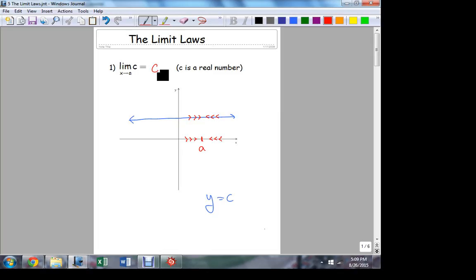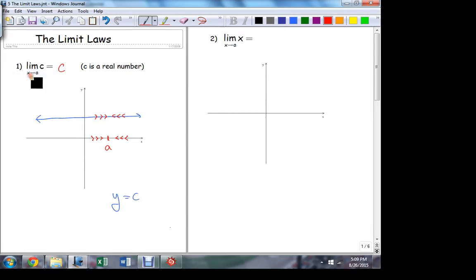Doesn't involve x. X changing doesn't have anything to do with how this, again, we can see it graphically. X changing doesn't have anything to do with this function's values. They're fixed. So the limit value must also be fixed. So for any constant, the limit is equal to itself. There's a picture, a geometric representation of why that has to be true.